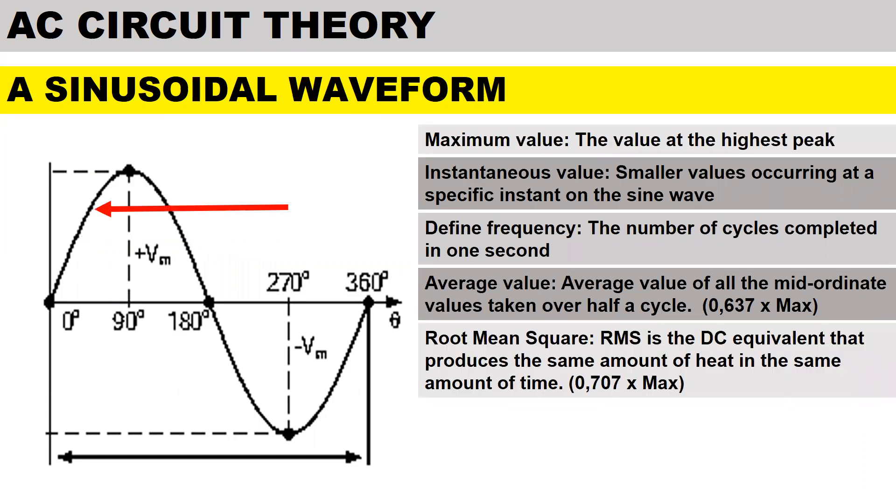To define the root mean square RMS is the DC equivalent that produces the same amount of heat in the same amount of time. To calculate the RMS value it is 0.707 multiplied by the maximum value. To define form factor it is the ratio of the RMS value to the average value.